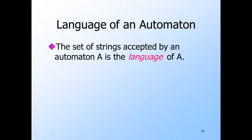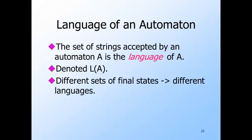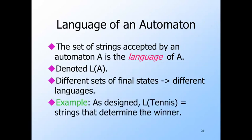Now let's get a bit more formal. The job of a finite automaton is to process strings of inputs and accept or reject them. It accepts the string if it leads from the start state to a final state — 'accepting state' is a synonym for 'final state.' A language is simply a set of strings in the formalism used for automata. The language accepted by an automaton A is denoted L(A). In our tennis example, we call the two states where one of the players wins the final states, so the language of the automaton is the set of strings of S's and O's that end the game no matter who wins.